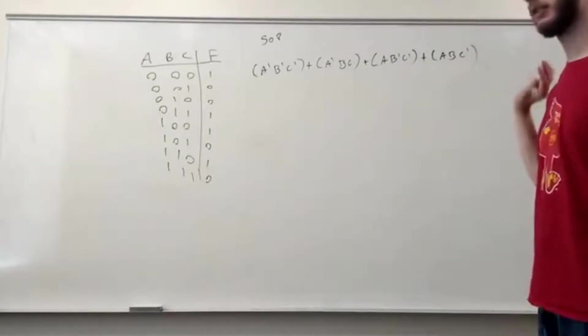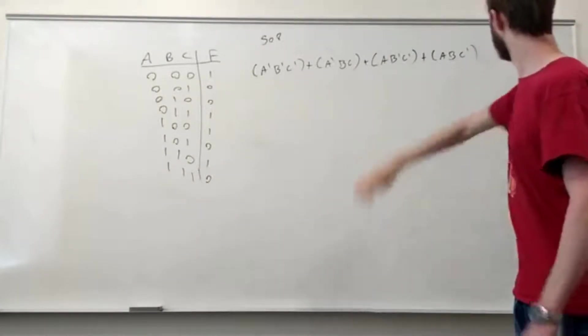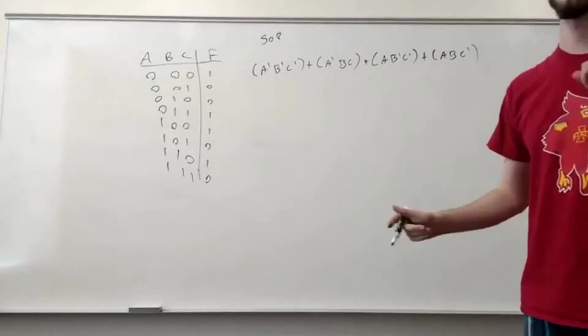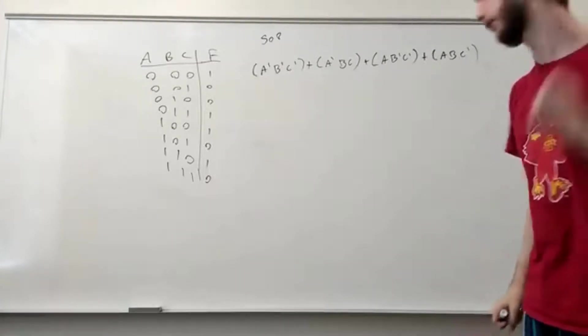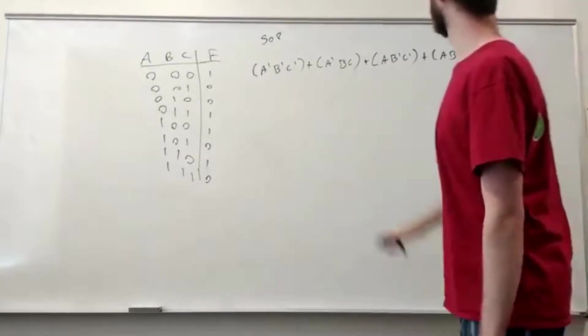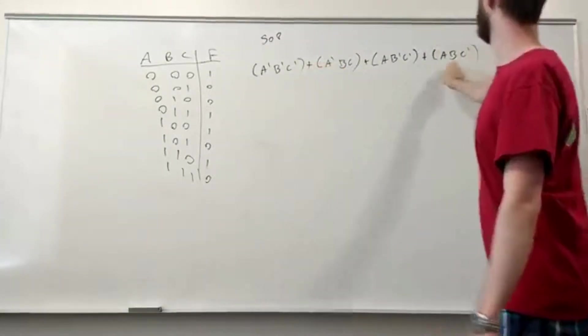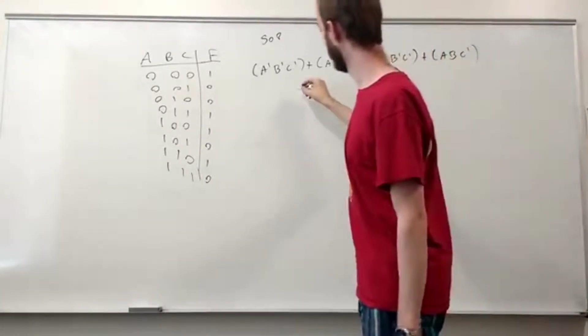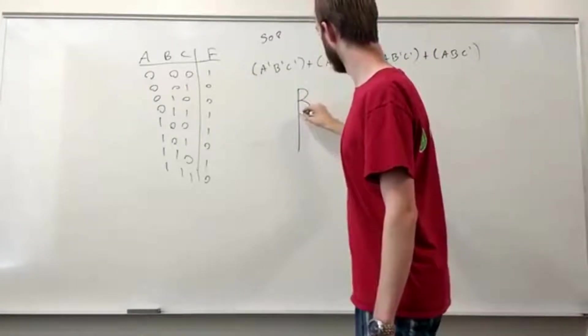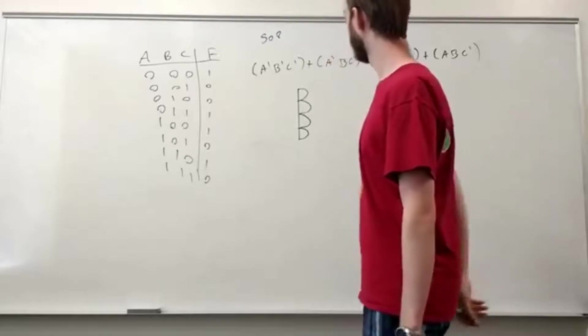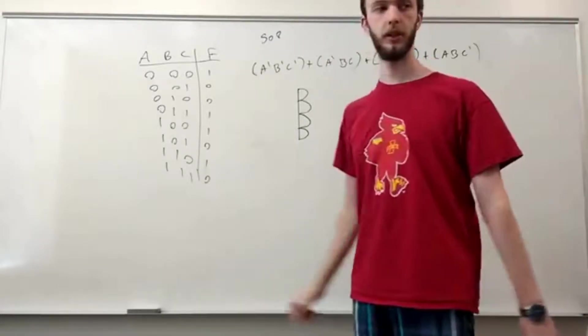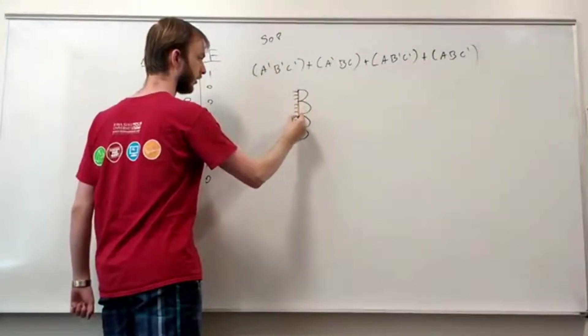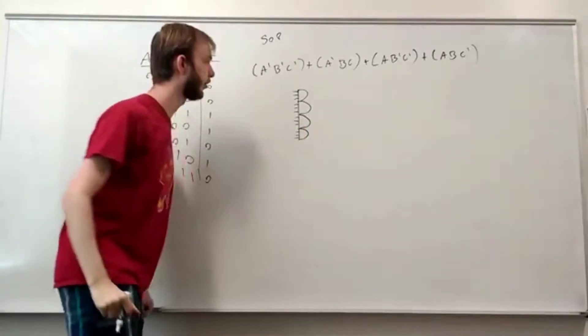And there you go. That is a logic expression for our truth table. And now we just have to transform that into a digital logic circuit using AND gates and OR gates that we talked about last time. So, to do that, we see we have one, two, three, four AND gates that are all three inputs each. So let's just create those. We have four, and they're each three inputs.